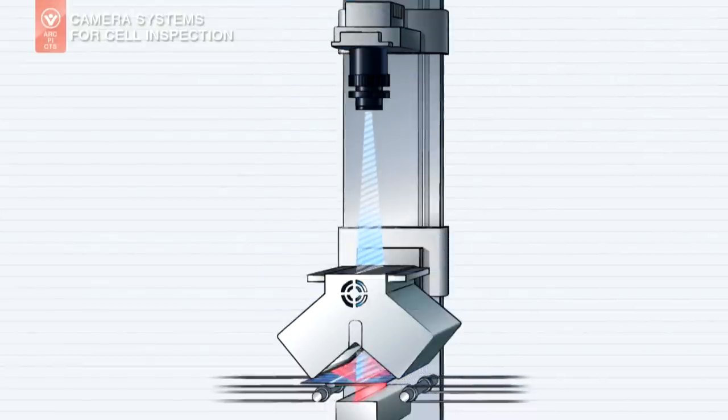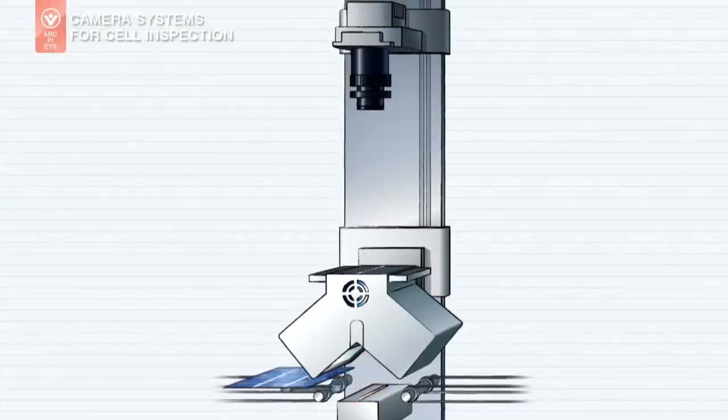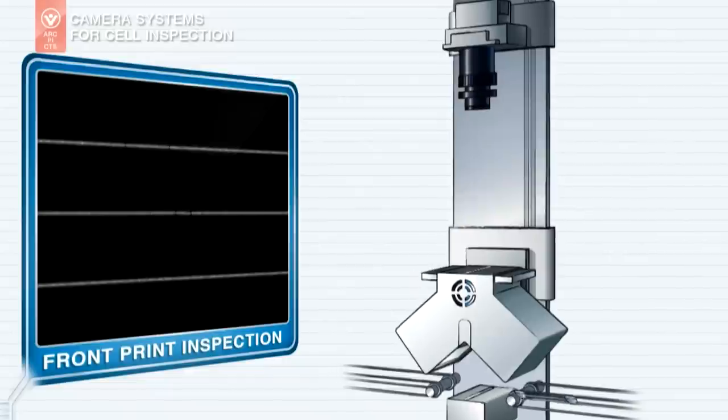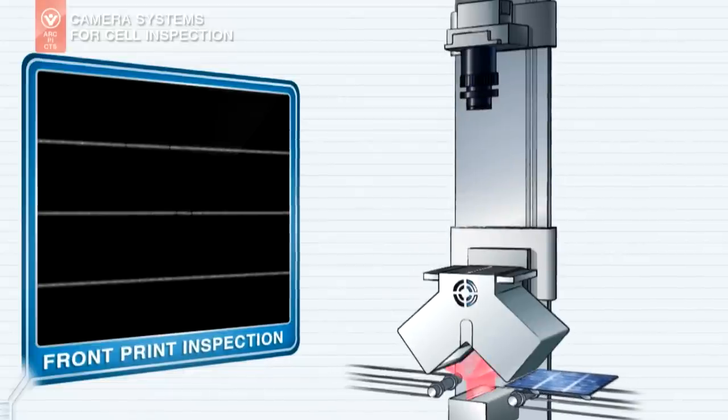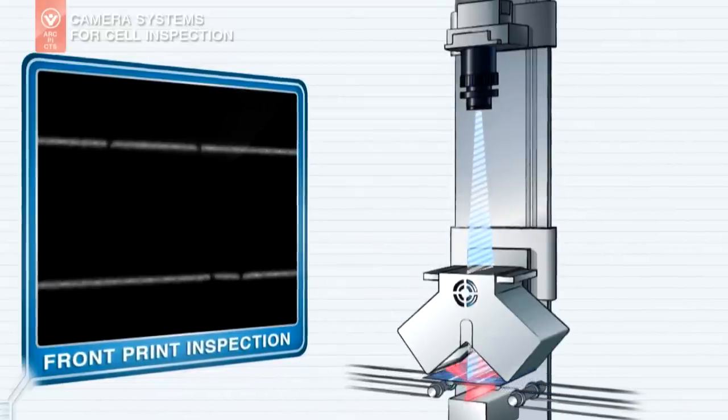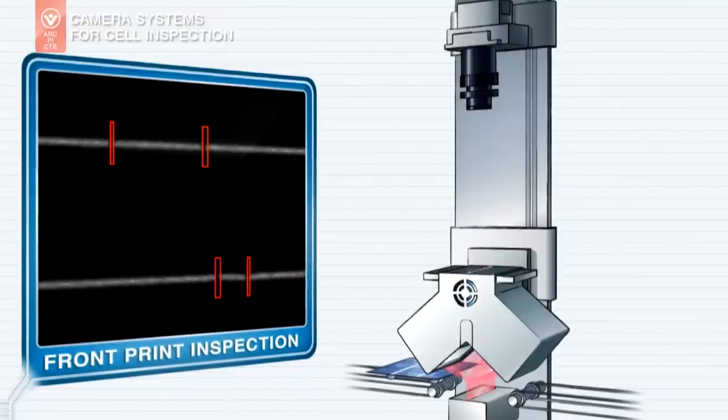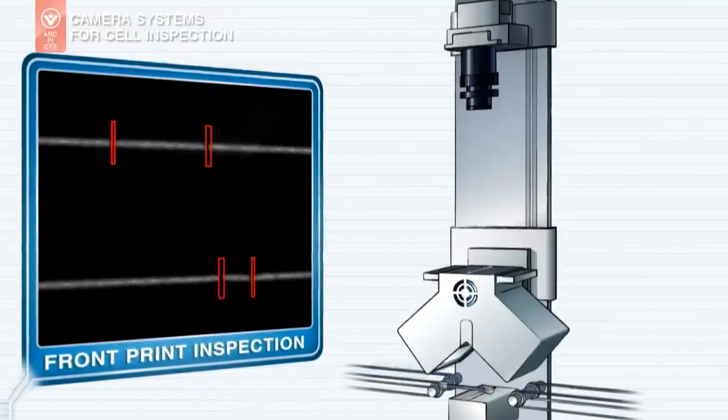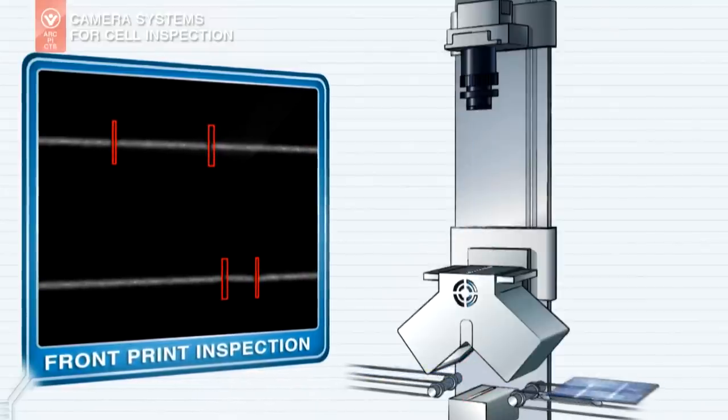The camera is positioned perpendicular to the cell, scans the solar cell line by line and maps out the surface with a resolution of up to 20 micrometers, creating a razor sharp and detailed image. This makes it possible to reliably identify faults in the metallization coating and along the edges.